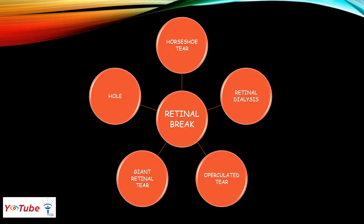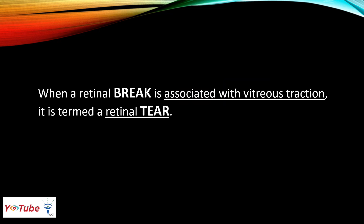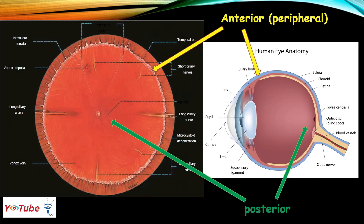This leads to separation of neurosensory retina from the retinal pigment epithelial layer, which leads to retinal detachment. A retinal break can be a horseshoe tear, hole, giant retinal tear, operculated tear, or retinal dialysis. When a retinal break is associated with traction, it is termed a retinal tear.